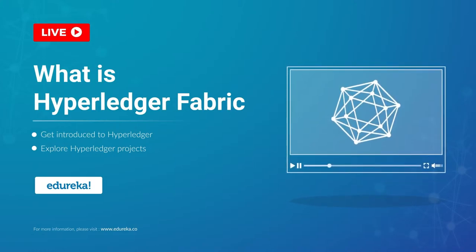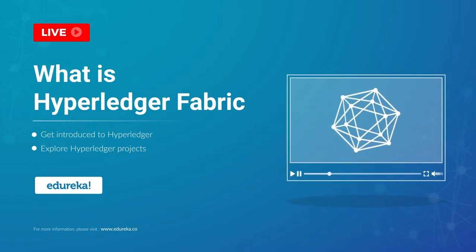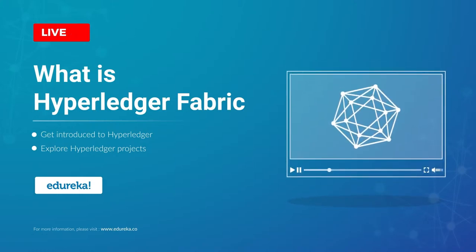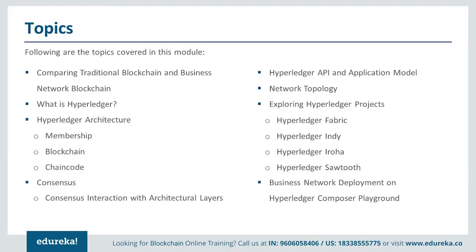Welcome to Edureka, this is Anuj. Today we will start with Hyperledger. We will see how to compare traditional blockchain and a business network, what is the Hyperledger project, what is the architecture, how you achieve consensus in a Hyperledger network, and what are the different API and application models available, along with different network topology types and the different projects — Fabric, Indy, Iroha, Sawtooth.